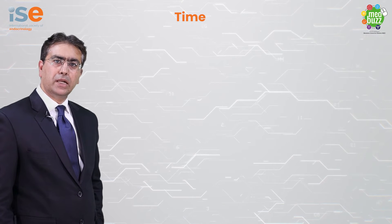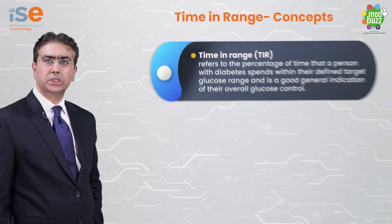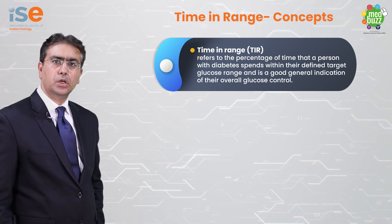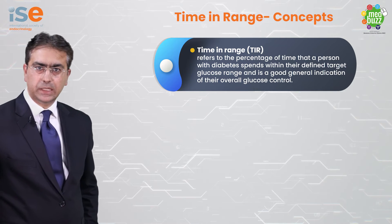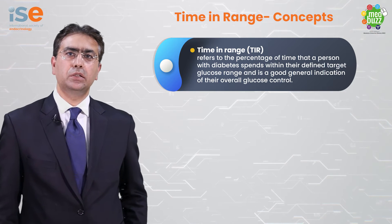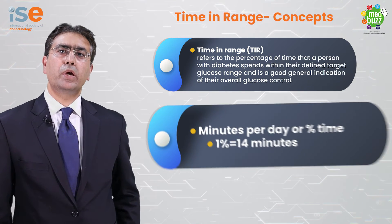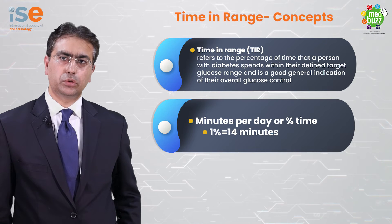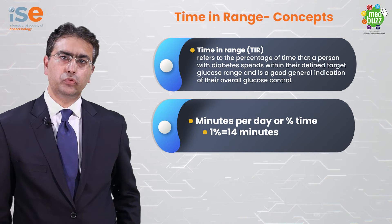Time in range refers to the percentage of time that a person with diabetes spends within their defined target glucose range. It is a very good general indication of their overall glucose control, and roughly 1% is equivalent to 14 minutes.